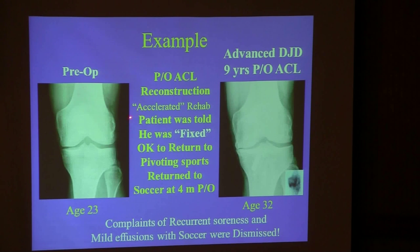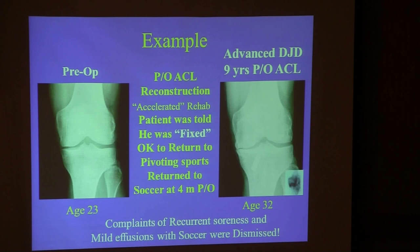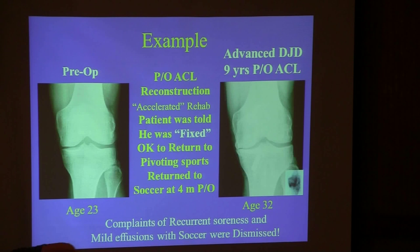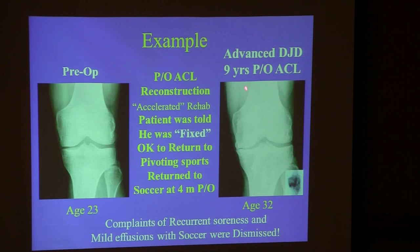He had an ACL reconstruction with bone-tendon-bone and an accelerated rehab program, which I think is anti-biological and quite wrong. The patient was told he was fixed and okay to return to pivoting sports at four months — which is anti-biological and dangerous, in my opinion. He had recurrent soreness and mild effusions which were dismissed, and he continued to play.